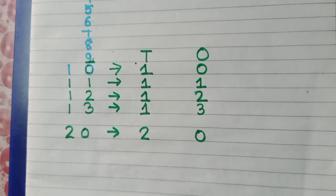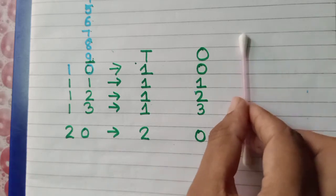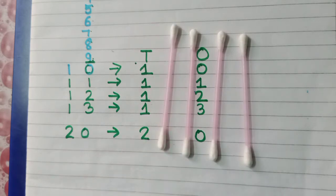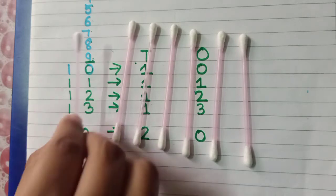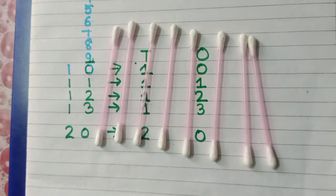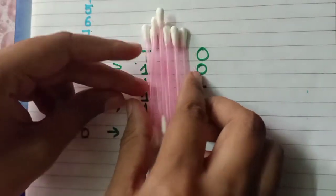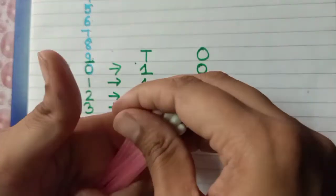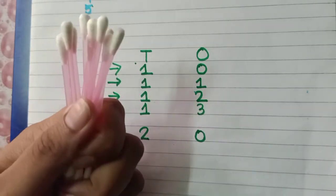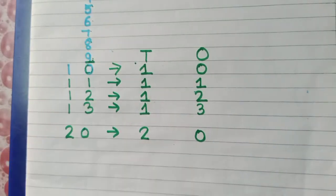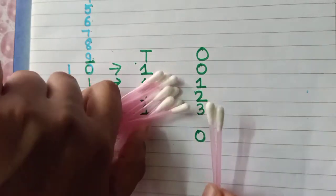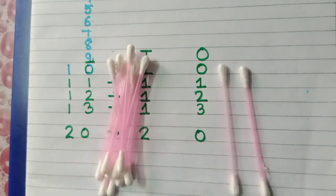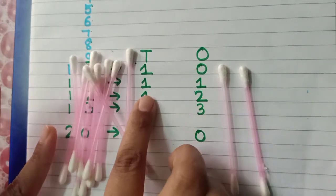Now look at another example. These are ten birds — 1, 2, 3, 4, 5, 6, 7, 8, 9 and 10. Ye ten ear birds ka bundle hai — one tens. If we add two more, these are the bundle of ten birds plus two. So ten and two is twelve — one tens and two ones.